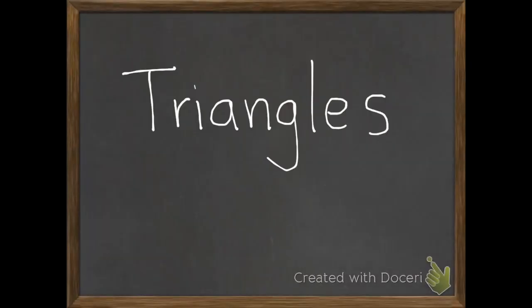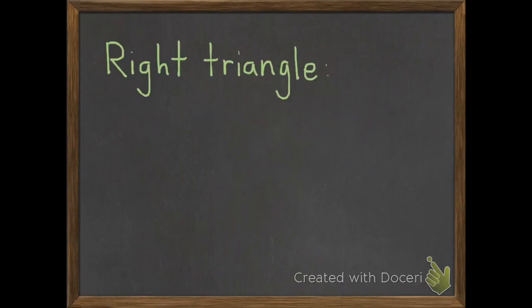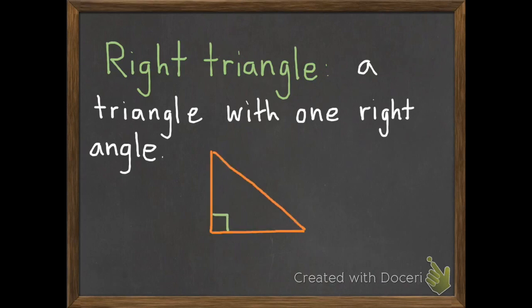Today we're going to learn about triangles. We have three vocabulary words today for you to write down. The first is right triangle. A right triangle is a triangle with one right angle. Here's a picture — there's a triangle and it has one right angle.